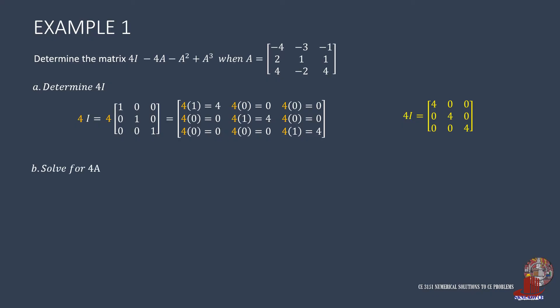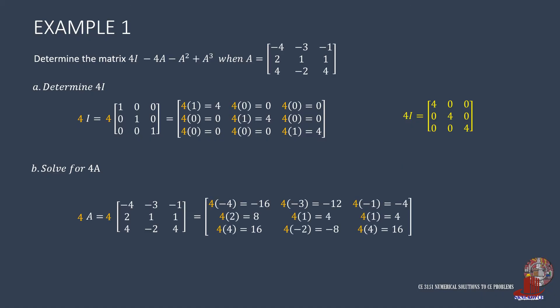The next term to determine is 4A. This is quite similar to the first term, only that the matrix to be multiplied by 4 is matrix A with varied elements. The scalar 4 is multiplied among the elements: element (1,1) has 4 times negative 4, which is negative 16; element (2,1) has 4 times 2, making 8; element (3,1) has 4 times 4, which is 16; element (1,2) has 4 times negative 3, that is negative 12; element (2,2) has 4 times 1, which is 4; element (3,2) has 4 times negative 4, which makes negative 8; element (1,3) has 4 times negative 1, giving negative 4; element (2,3) has 4 times 1, making 4; element (3,3) has 4 times 4, which gives 16. Now 4A is completed.